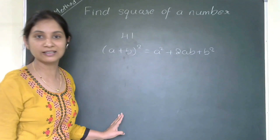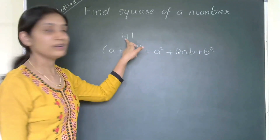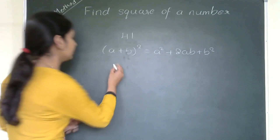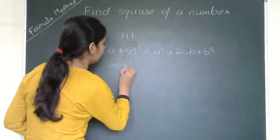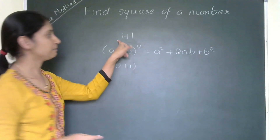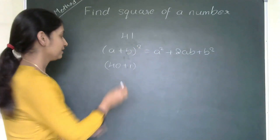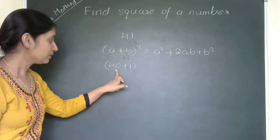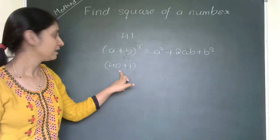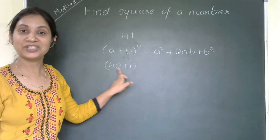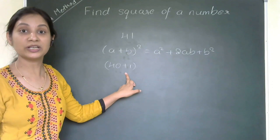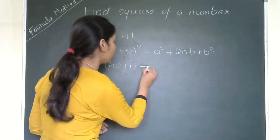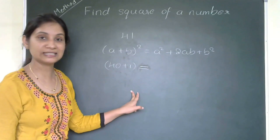This formula we have already learnt. So 41 can be written as something plus something — 40 plus 1, right? 40 plus 1 is 41. So here I am splitting this given number using a base 10. 40 is a number which is ending with 0, so it will be very easy when we multiply it. We can apply the formula and find out the answer very easily.